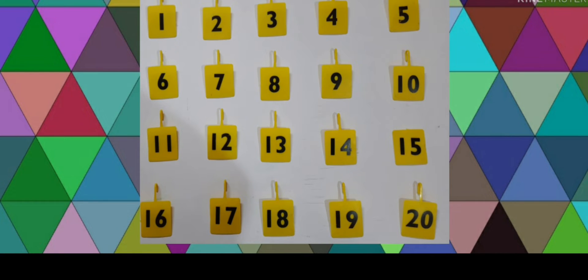Now from your mathematics toolkit, take out all the number cards that you have from 1 to 20. Arrange the numbers 1 to 20 in sequence as shown on the screen. You can also take the help of your parents. After the numbers are arranged in sequence, you can play the first activity with your siblings or with your parents.